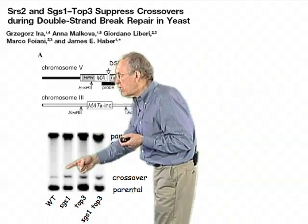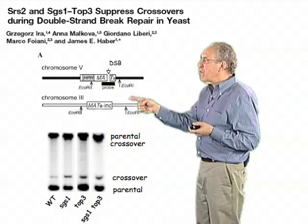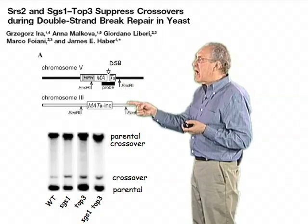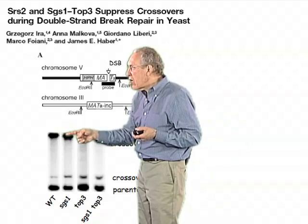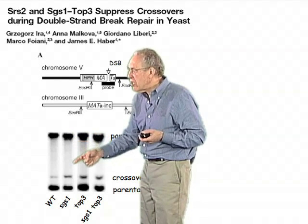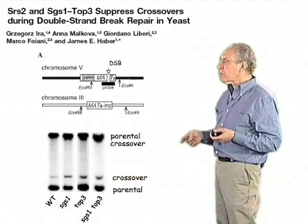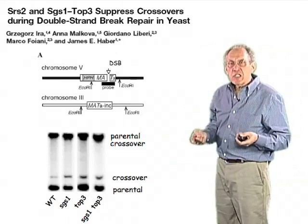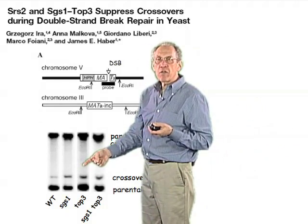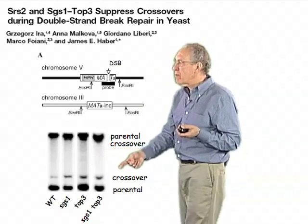The crossover product can be detected using restriction enzymes placed differently in the top and bottom molecules, producing novel restriction fragments upon crossing over. There is very little crossing over in the normal repair process. If we remove the yeast equivalent of Bloom's protein, called SGS1, there is a significant increase in crossing over. Removing the topoisomerase gives the same result, and removing both together also gives the same result.